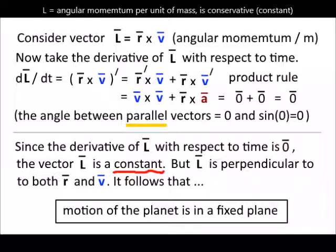Noting that vector v is parallel with itself and vector r is parallel with vector a from the previous slide, then by the geometric definition of cross product, v cross v and r cross a must both be the zero vector. Since we have shown that the derivative of the vector L with respect to time is the zero vector, vector L must be a constant.